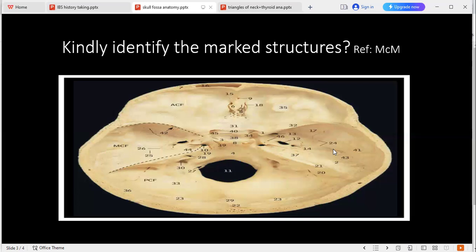Can you identify trigeminal impression over here and tell me where exactly would that be? Number 44 is the trigeminal impression. What exactly is it? The trigeminal impression is for the trigeminal ganglion.